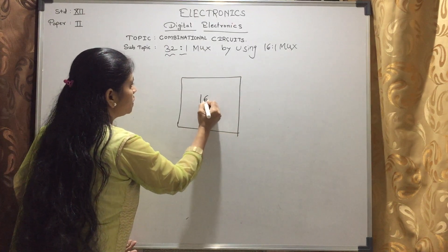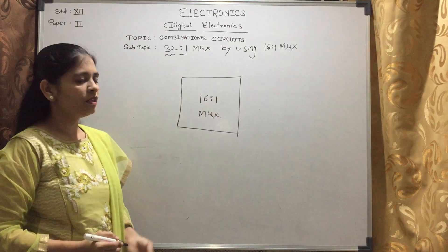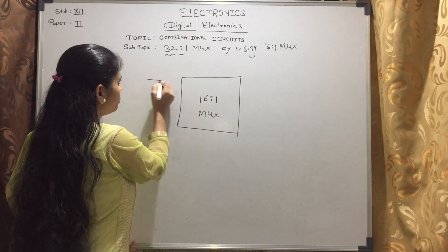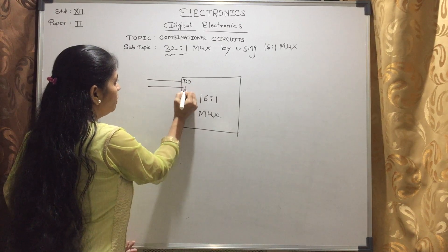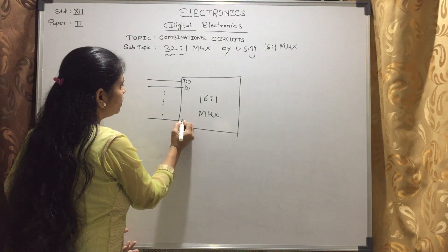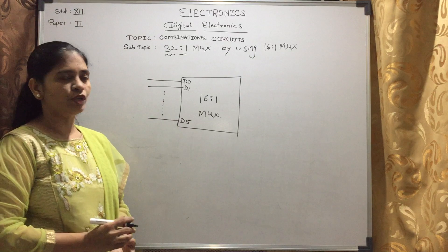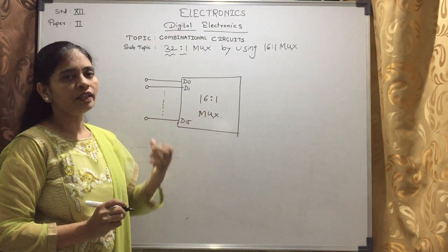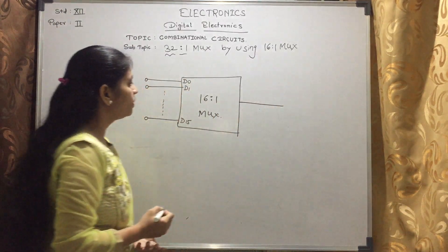This is the first 16-to-1 multiplexer. It has 16 inputs starting from D0, D1, D2, D3, D4, and so on up to D15 — total 16 inputs. These are all 16 inputs of the first multiplexer, and it has 1 output.